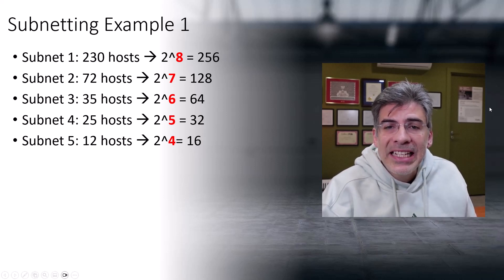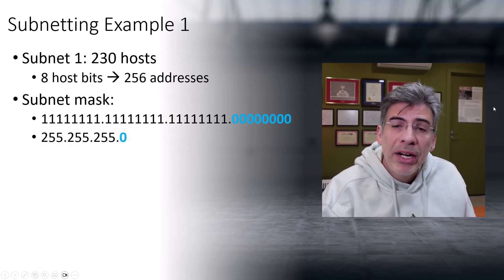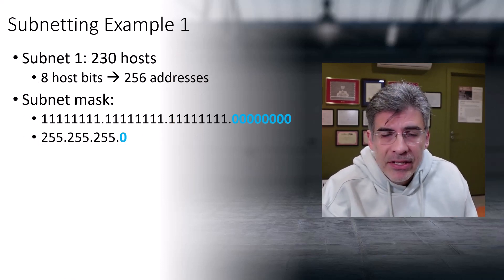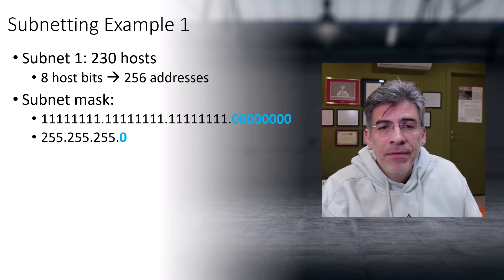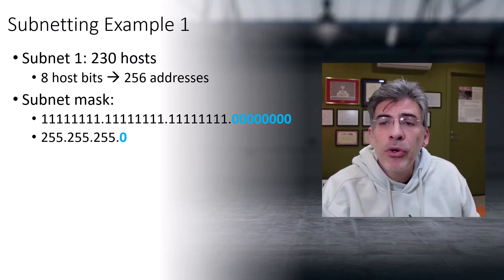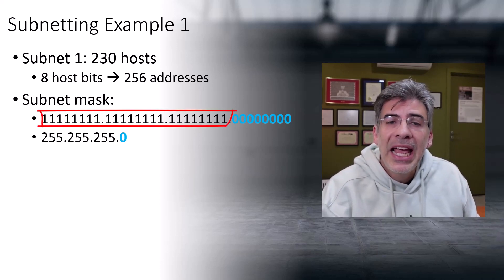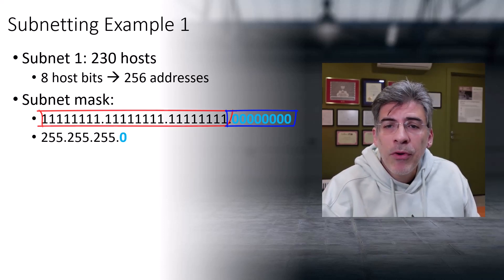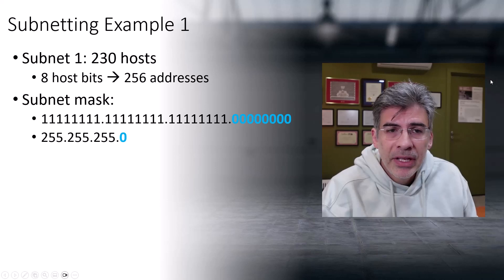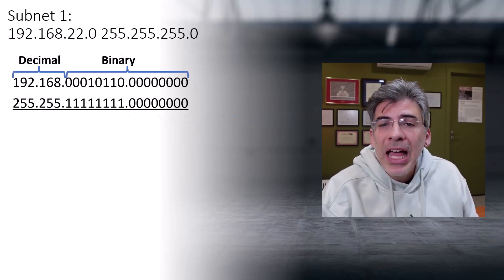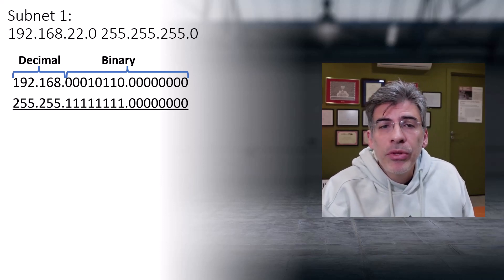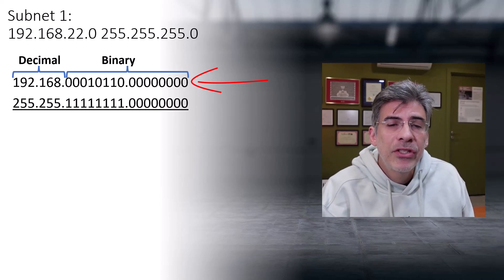Let's look at the details of subnet number one. We want to accommodate 230 hosts. We are using eight host bits, which gives us 256 addresses. With eight host bits, our subnet mask in binary is composed of 24 ones and eight zeros. In dotted decimal format, that comes to 255.255.255.0. To start subnetting, we take our initial address space of 192.168.22.0 and write it out with the last two octets in binary.